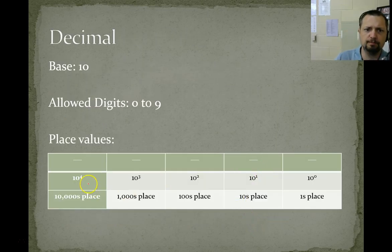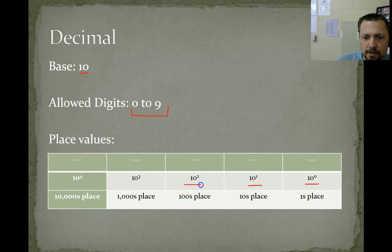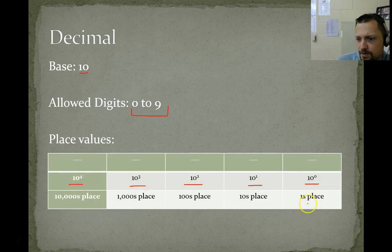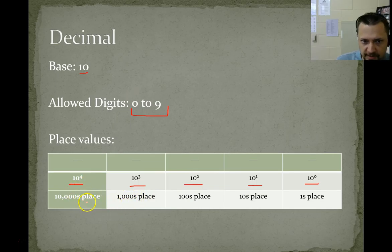We're looking at the decimal system. The base is 10. The allowed digits are 0 to 9. And the place values are 10 to the 0, 10 to the 1, 10 to the 2, 10 to the 3, 10 to the 4. So this is the ones place, this is the tens place, this is the 100s place, this would be the thousands place, and this is the ten thousands place.